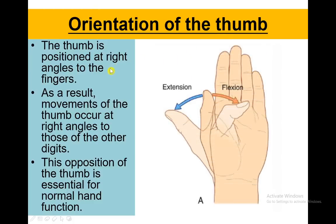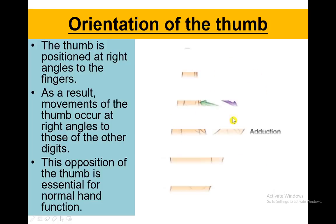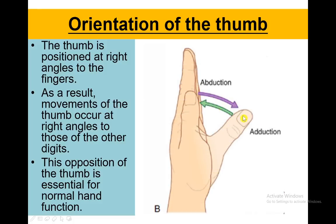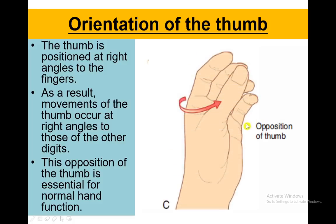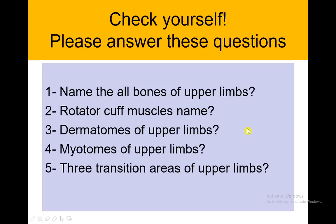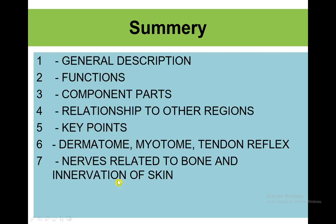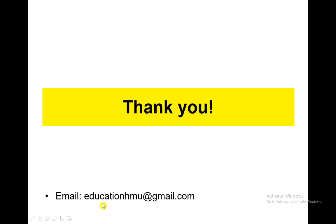Orientation of the thumb: the thumb is positioned at a right angle to the fingers, so its movements are different from the fingers. Flexion and extension perform in a different plane, and it also performs abduction and adduction. Very importantly, the thumb performs opposition with the other digits. After learning today, you should be able to answer five easy questions. This is the summary of what we learned today. Thank you very much — if you have any questions, you can send me an email. Thank you, bye-bye.